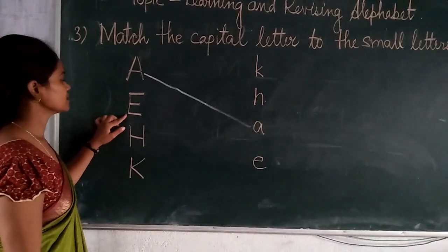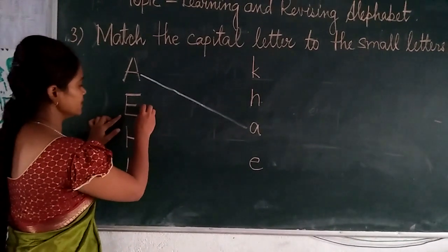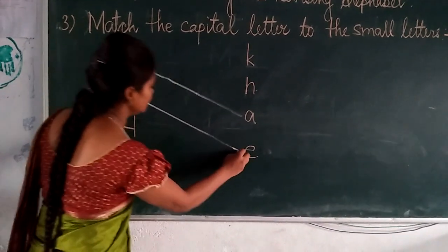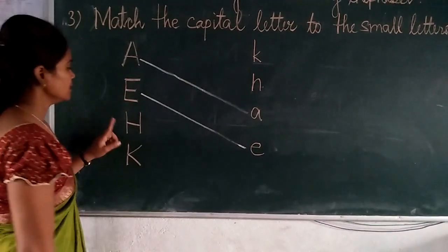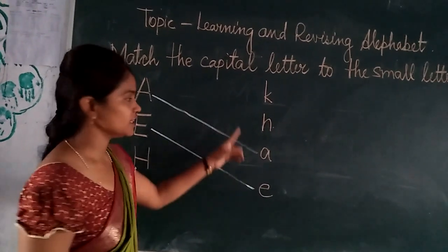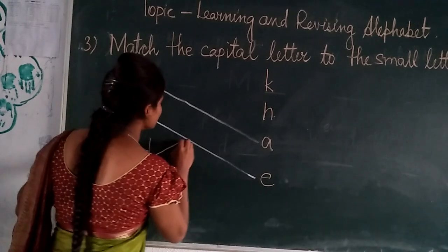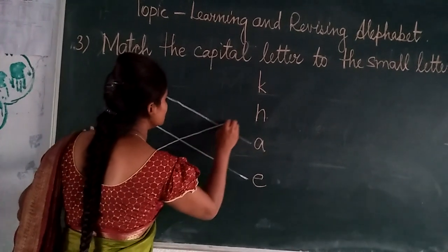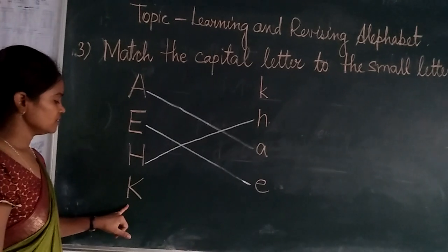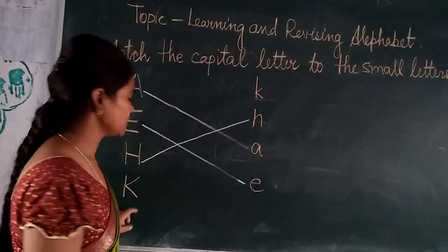Second is capital E — now we will find out the small E and match with it. Capital H — we will find out the small H and match capital to small H. Capital K — we will match with the small letter K.